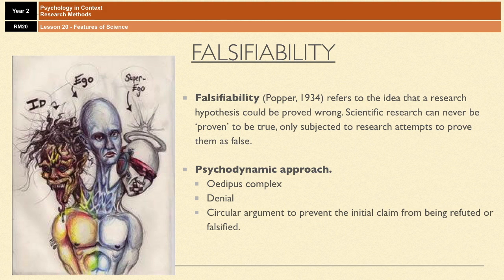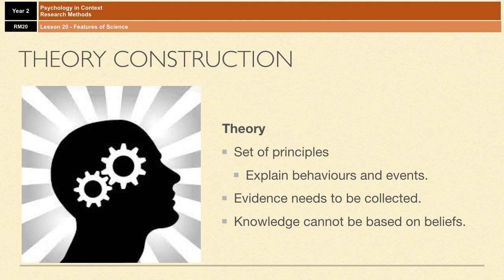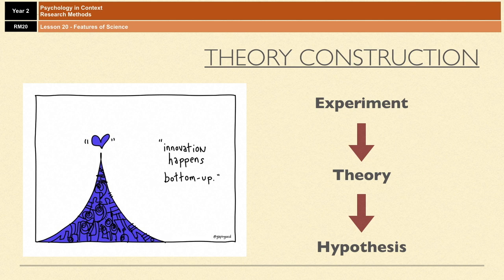Falsifiability is a fairly important concept you may not have come across very often. Moving on to theory construction and hypothesis testing: a theory is a set of principles intended to explain a certain behavior or event. To construct a theory, evidence needs to be collected first, because the empirical method doesn't allow knowledge to be based solely on beliefs. If a researcher suspects something is true, they devise an experiment, and if they discover a pattern, they can start constructing a theory.